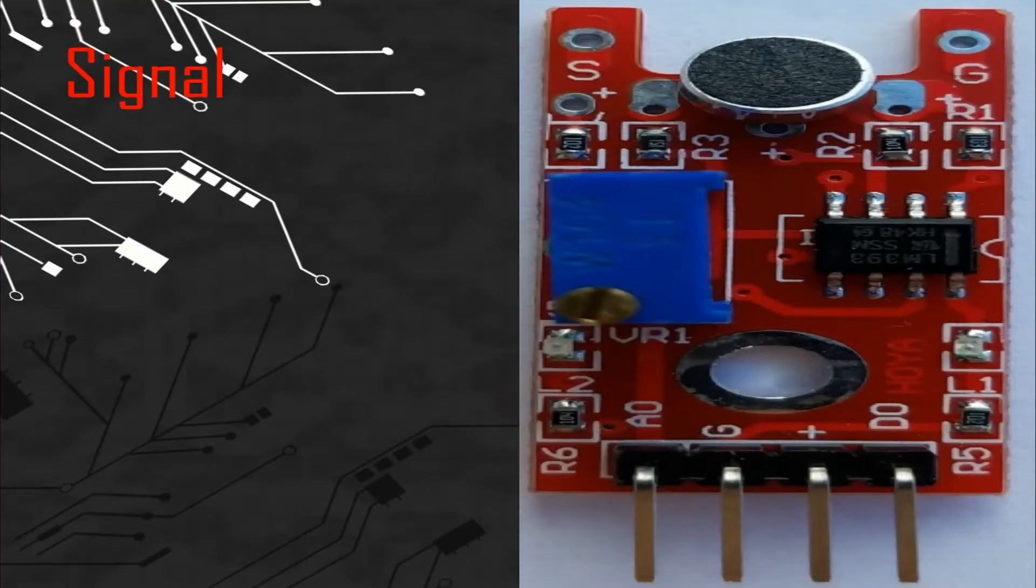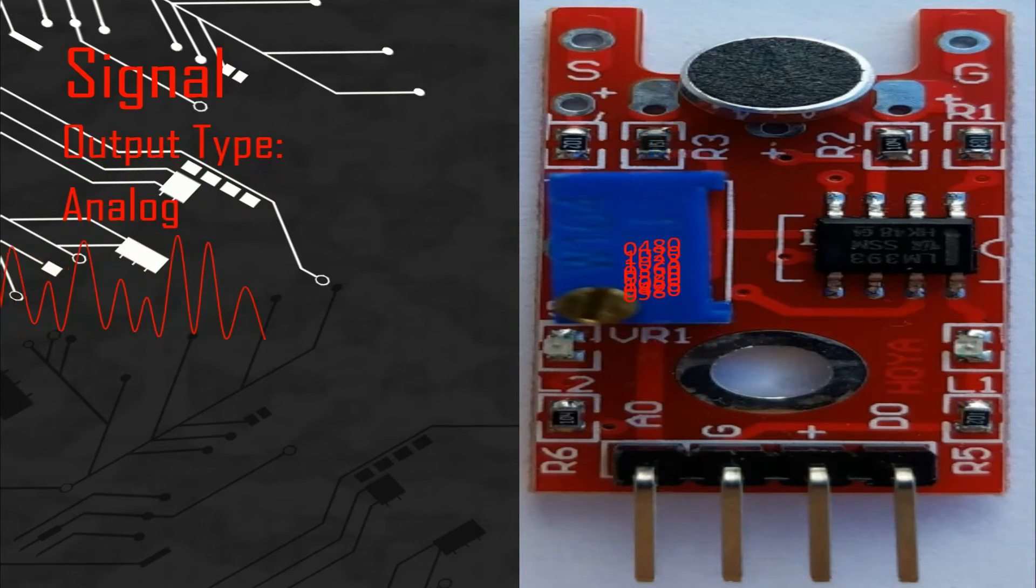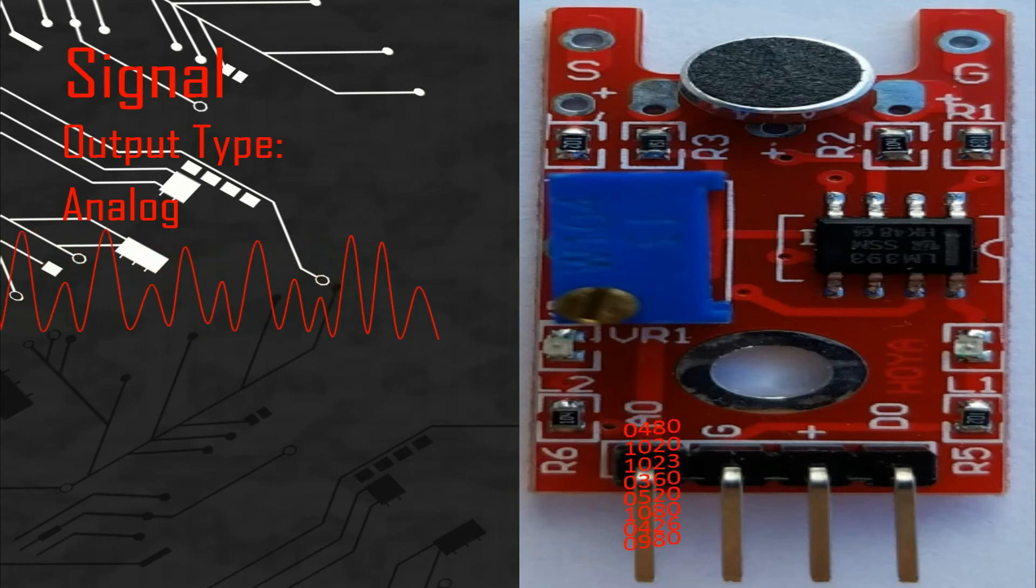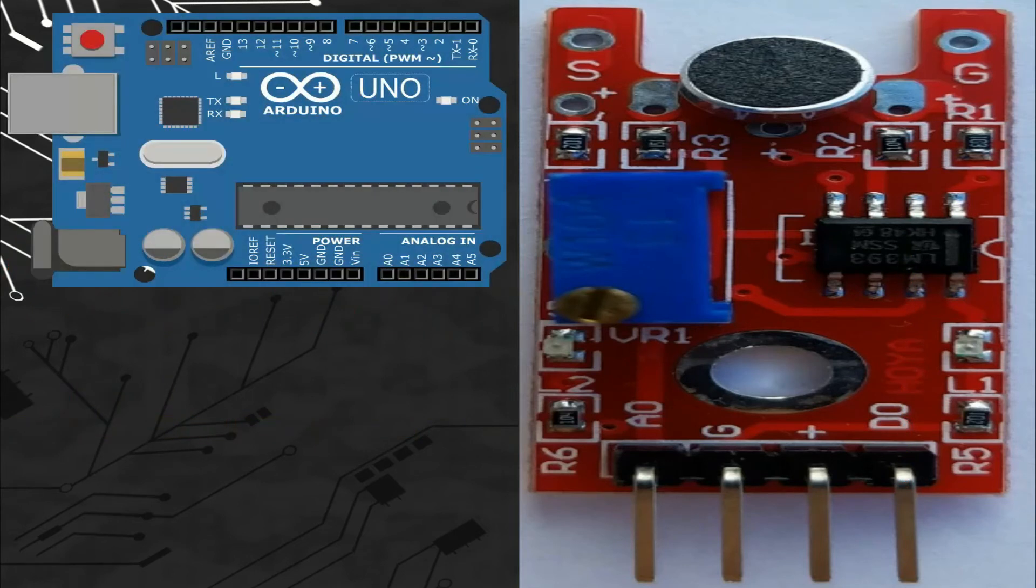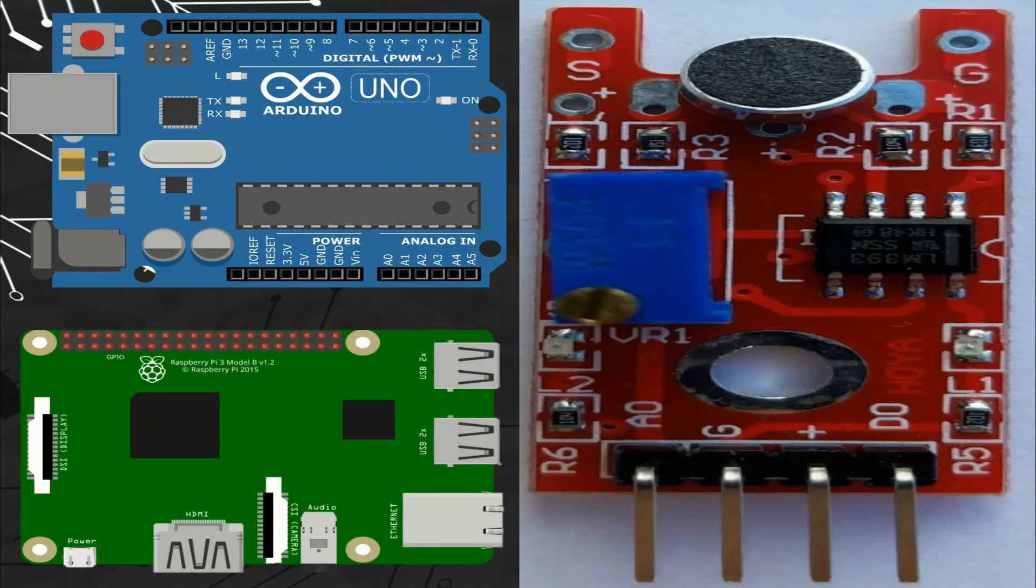Let's talk about the signal. This module gives two signals. We can connect the pin of the analog signal with any analog port and the pin of the digital signal with any digital port of different microcontroller boards like Arduino or Raspberry Pi.